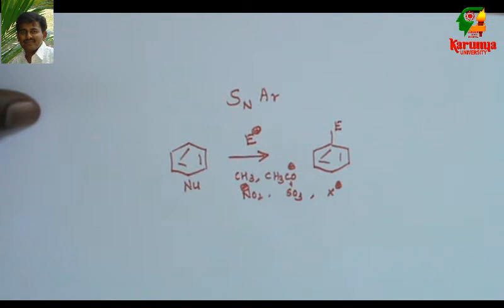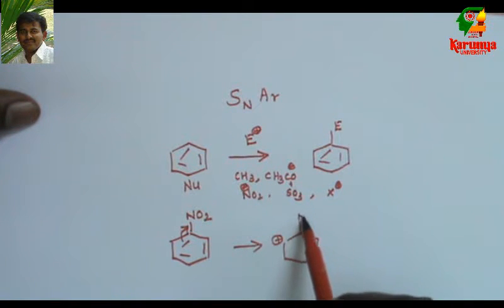But if you remove the electron density from the phenyl ring, then it is possible to be attacked by a stronger nucleophile. For example, if I introduce electron withdrawing group to this aromatic ring, this electron withdrawing group pulls the electron from the phenyl ring. As a result, we get positive charge in this position.